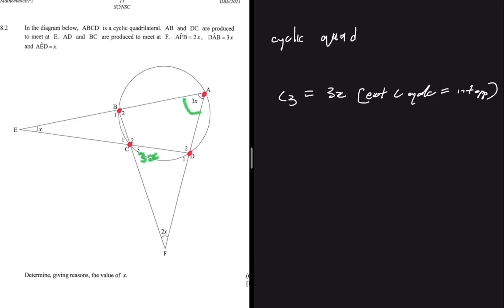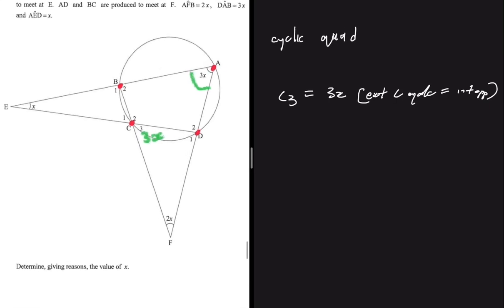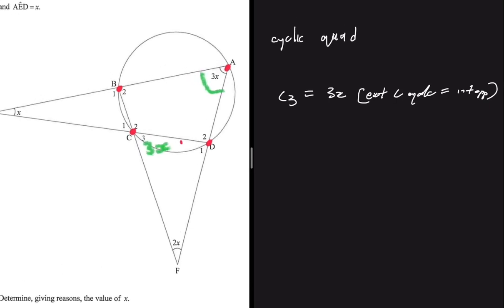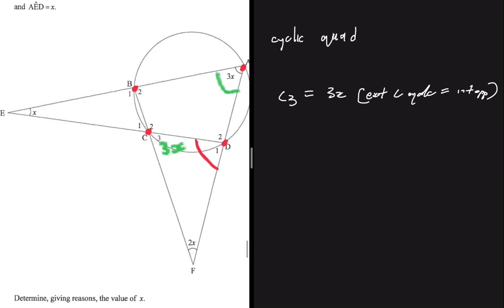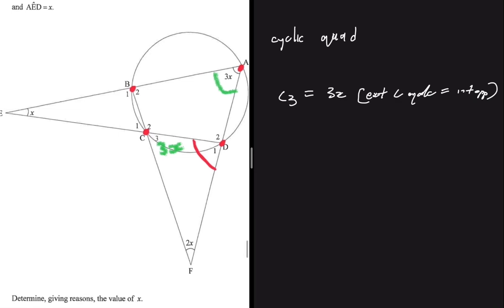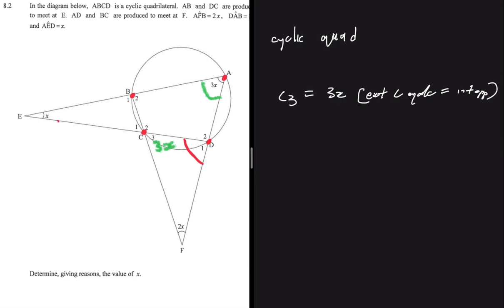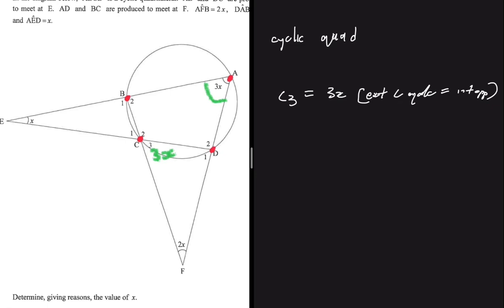This angle d1 should be equal to angle e plus angle a. Can you take some time and think about it? Yes, d1 should equal angle e plus angle a. You should get d1 - an exterior angle of a triangle is equal to the sum of two opposite interior angles. So we say that d1 equals x plus 3x, which is 4x.